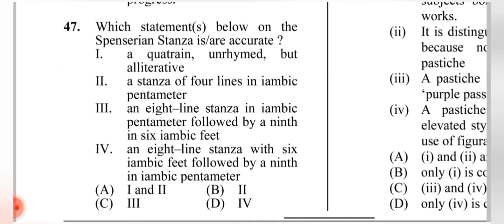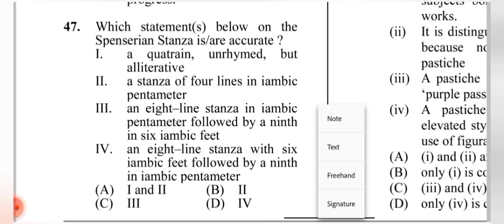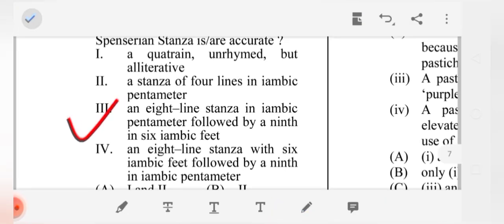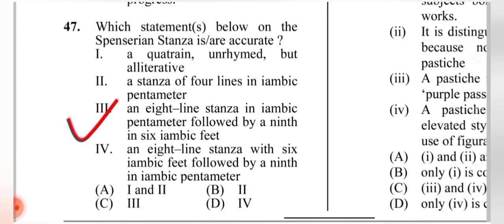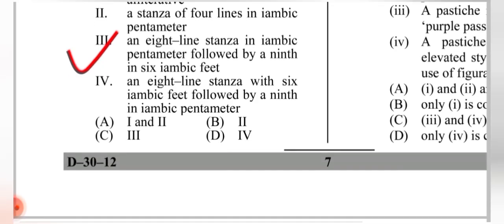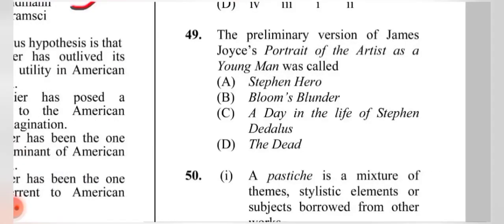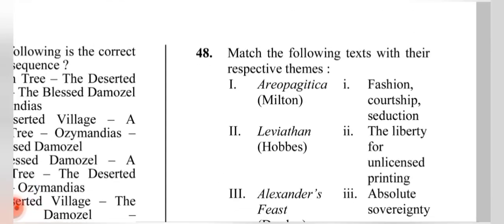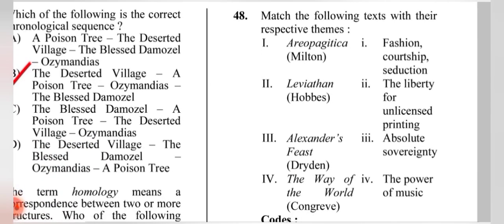Question 47: Which statement about the Spenserian stanza is accurate? The correct answer is (C) option 3: an eight-line stanza in iambic pentameter followed by a ninth line in six iambic feet (an alexandrine).